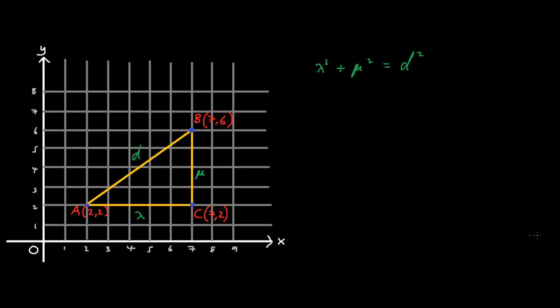To create the distance formula we need to know precisely what lambda and mu are in terms of x and y. So what I'm going to do is use the points A and B to find out what x1, x2, y1 and y2 are.